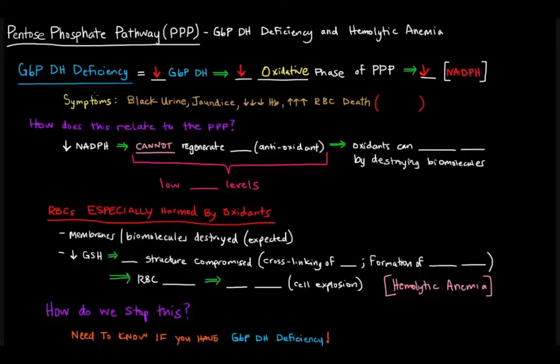Some of the symptoms of this deficiency are black urine, jaundice, really low levels of hemoglobin, and really, really high levels of red blood cell death via hemolysis.